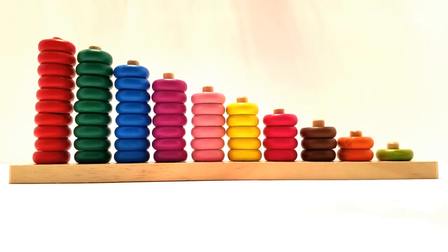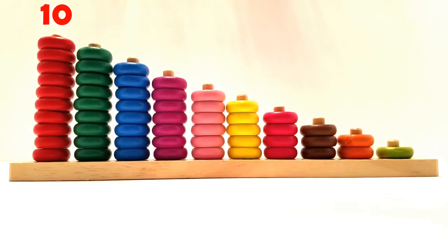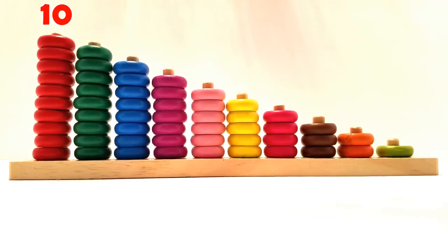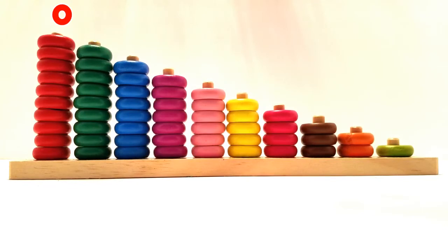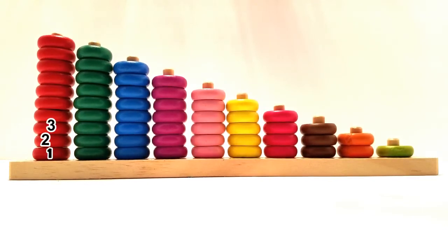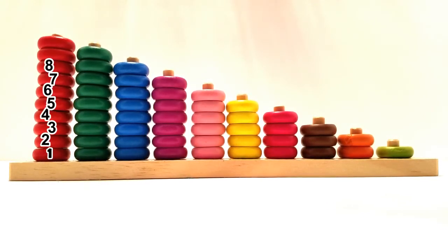What's the last number from one to ten? That's right. It's ten. We have ten red pieces here. We have ten pieces that go one, two, three, four, five, six, seven, eight, nine, ten.